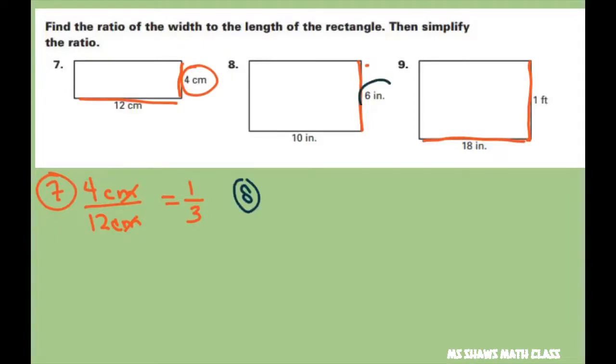So this is your width. So six inches to ten inches. The inches cancel out. Just divide your numerator and your denominator by two. That gives you three to five.